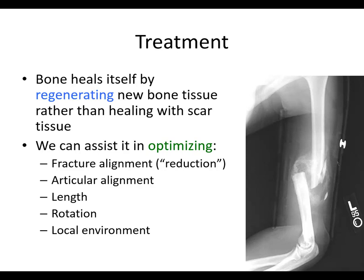Bone heals itself by regenerating new bone tissue rather than scar tissue. When you cut skin or tear muscle, it heals with scar tissue. But bone can't heal with scar tissue — it needs to provide mechanical support, so it has to heal with something strong. It's actually a regenerative healing process where it creates new bone. We can assist it by optimizing fracture alignment — also called reduction — articular alignment, length, rotation, and the local environment. These are the things you can do to help them heal in an optimal manner.